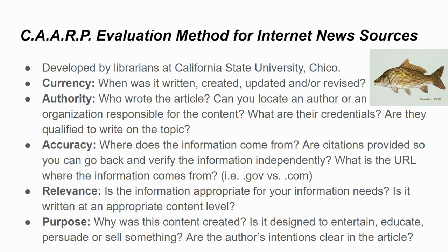Accuracy is really important. Where does the information come from? Are there citations provided so you can go back and verify the information independently? What is the URL? There's a vast difference between a .gov site, which is a government site, versus a .com site, which is a commercial site. If they include links or citations, you want to verify information independently. If you can't go back and see the sources they're using, you need to be suspicious.